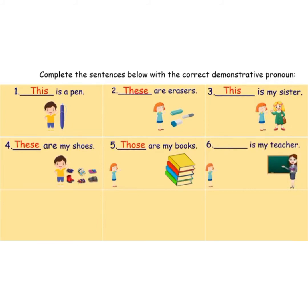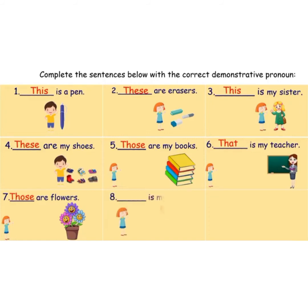Sixth: 'Dash is my teacher' — far. The answer is: 'That is my teacher.' Seventh: 'Dash are flowers.' The answer is: 'Those are flowers.' Eighth: 'Dash is my cat' — singular, far. The answer is: 'That is my cat.'